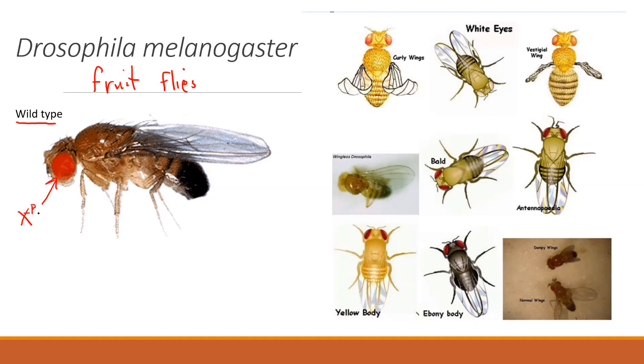The dominant is big R, so if this was a female she would have big R big R or she could be big R little r. But if the eyes are white, this fly would be little r Y for male.